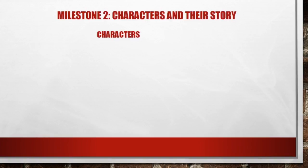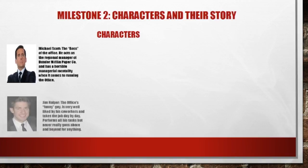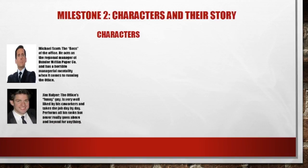Now let's go over some of the characters at the office. First, we have Michael Scott. Michael Scott is the boss of the office. He acts as the regional manager of Dunder Mifflin paper company and has a horrible managerial mentality when it comes to running the office.